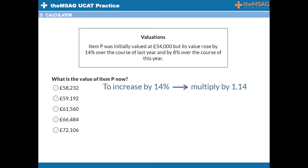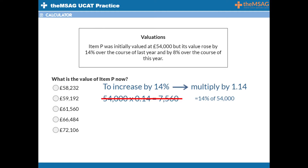To increase by 14%, multiply by 1.14. The 1 at the front just represents the original amount, and the 0.14 serves to increase the amount by 14%. We do not multiply by 0.14, as that would merely find 14% of the original amount, and forces a further step of adding that 14% to the original amount. Instead, multiply by 1.14 to increase by 14% directly. Do you see the difference? 54,000 times 1.14 equals 61,560.